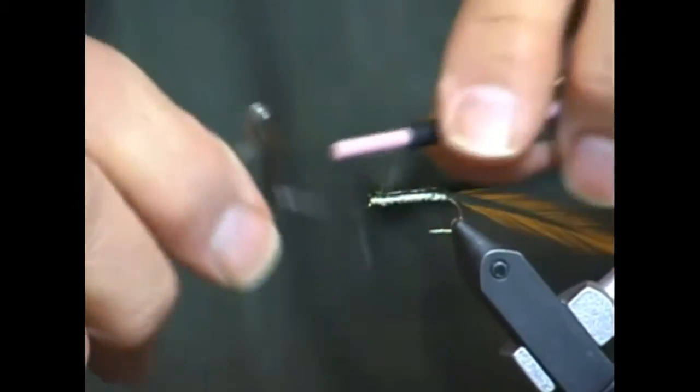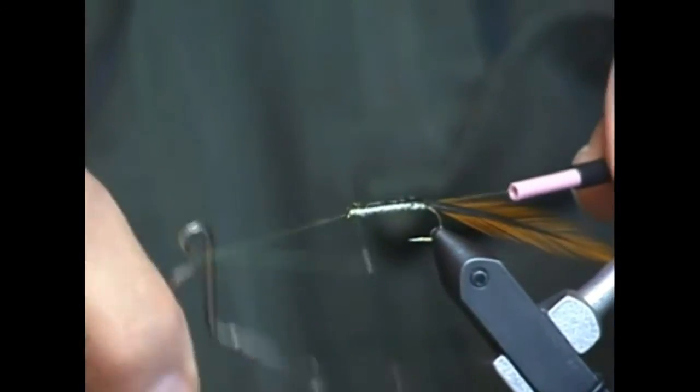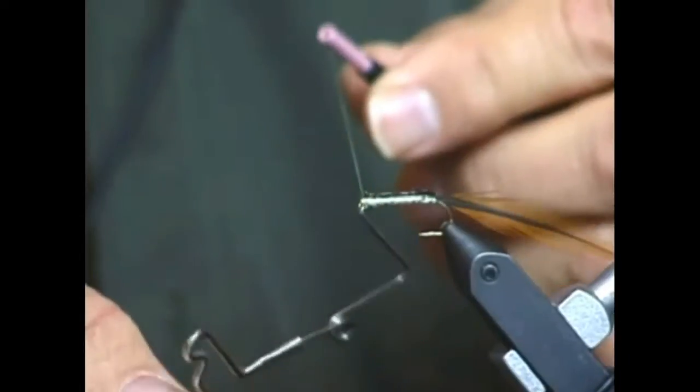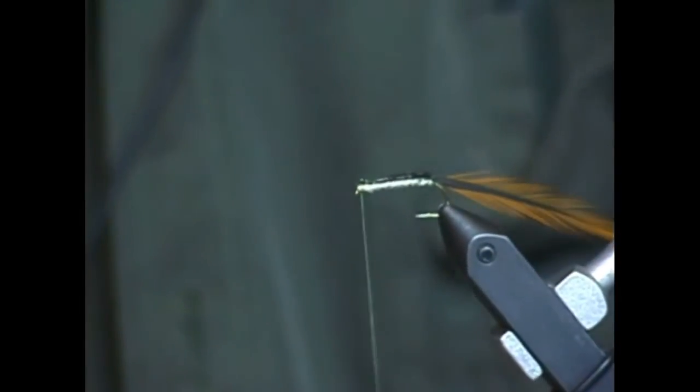Now I'm going to use a security wrap, two wraps using a Mattarelli type whip finisher to secure the material to the hook shank as we move on to the next step.